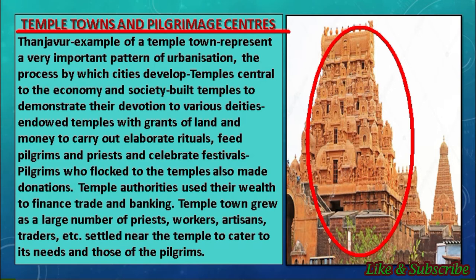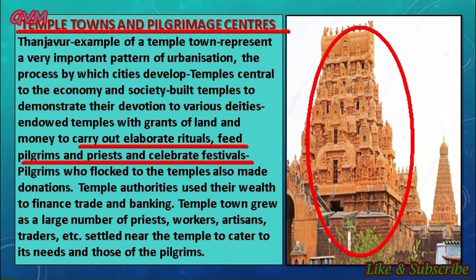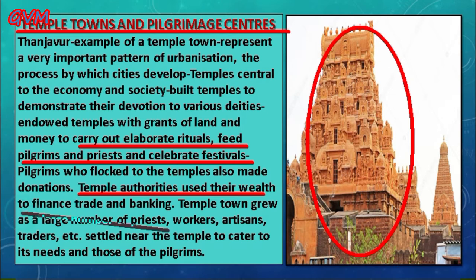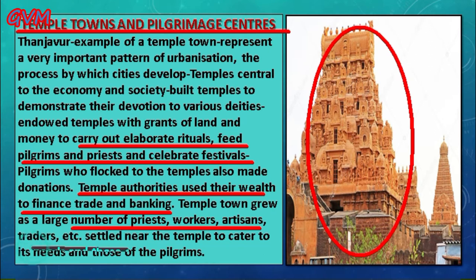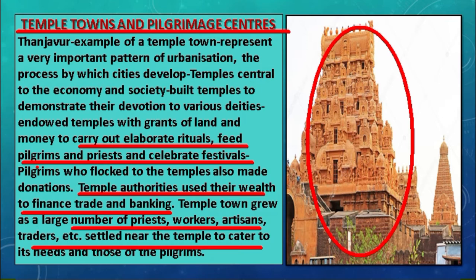Rulers carried out elaborate rituals, fed pilgrims and priests, and celebrated main festivals around these temples. All donations made by pilgrims were used by temple authorities to finance trade and banking. Temple towns grew because large numbers of priests, workers, artisans, and traders settled near the temples in order to cater to their needs and those of the pilgrims.